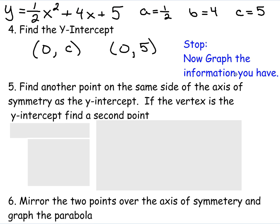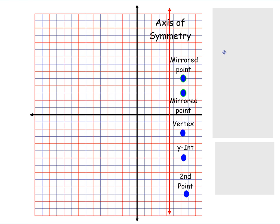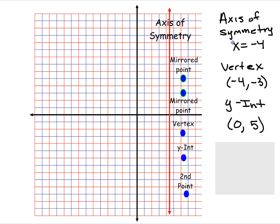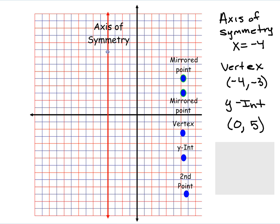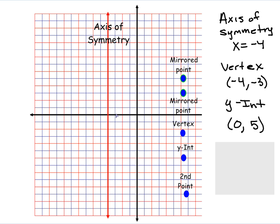Now that we have the vertex, y-intercept, and axis of symmetry, we're going to graph this information. First we graph the axis of symmetry at x equals negative 4. Then we graph the vertex at negative 4, negative 3 — going over negative 4 and down 3 on the graph.